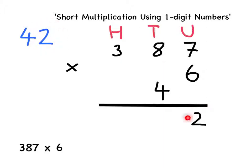The 2 has been written here in the answer part of the units column, and the 4 to represent 40 has been written in this part of the tens column.